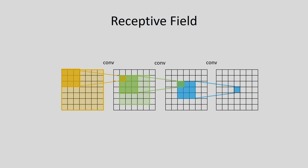Three 3x3 convolution filters are stacked to achieve the same receptive field as one 7x7 filter applied directly. The first, second, and third 3x3 filters together produce the same output coverage as a 7x7 kernel. This first method is more efficient because we are considering three 3x3 convolution filters instead of one 7x7 convolution filter, reducing the number of parameters and yielding a simpler structure.